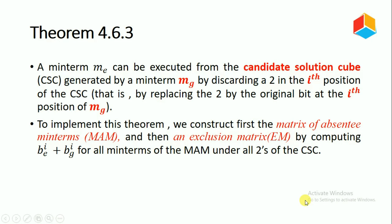Next, Theorem 4.6.3: a minterm ME can be excluded from the candidate solution cube generated by minterm MG by discarding a 2 in the i-th position of the candidate solution cube — that is, by replacing the 2 with the original bit at the i-th position of MG. To implement this theorem, we construct first the Matrix of Absentee Minterms (MAM), and then an Exclusion Matrix (EM) by computing the XOR operation between the binary values of ME and MG for all minterms under all 2s of the candidate solution cube.